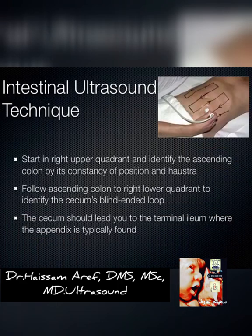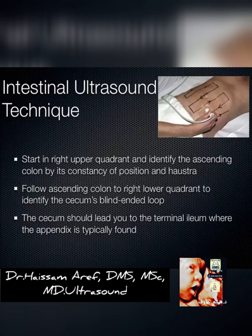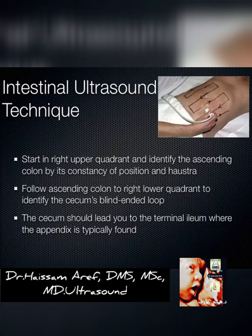In a larger patient we sometimes have to use the curvilinear transducer, but almost always I can get by pushing hard enough with the linear transducer to get really nice images. We use a technique called mowing the lawn, where you start in the right upper quadrant where the ascending colon is — it's always there and it has haustra, versus the plicae circulares you see with the small bowel. You can identify these on ultrasound when the bowel is filled with fluid.